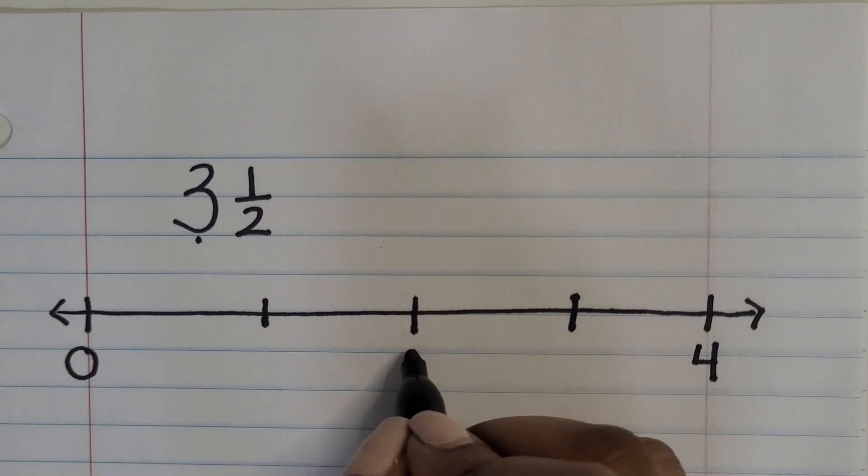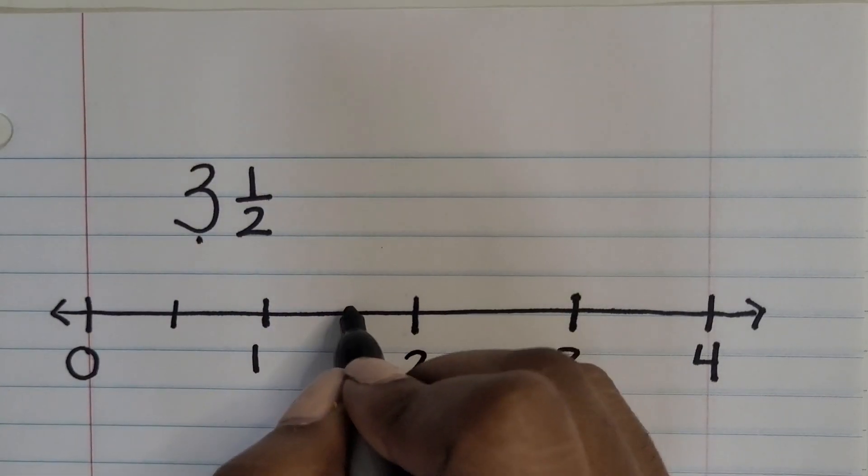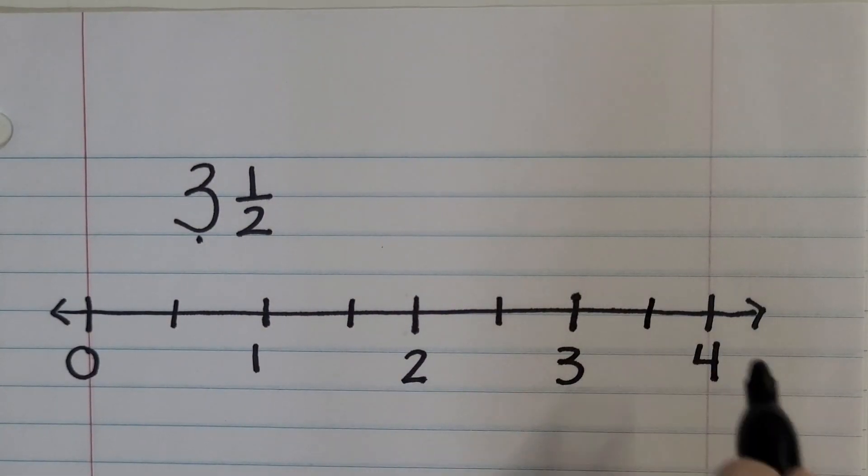So we have one hole, two holes, three holes and then four. And then because our fraction shows halves we're gonna partition each hole in half.